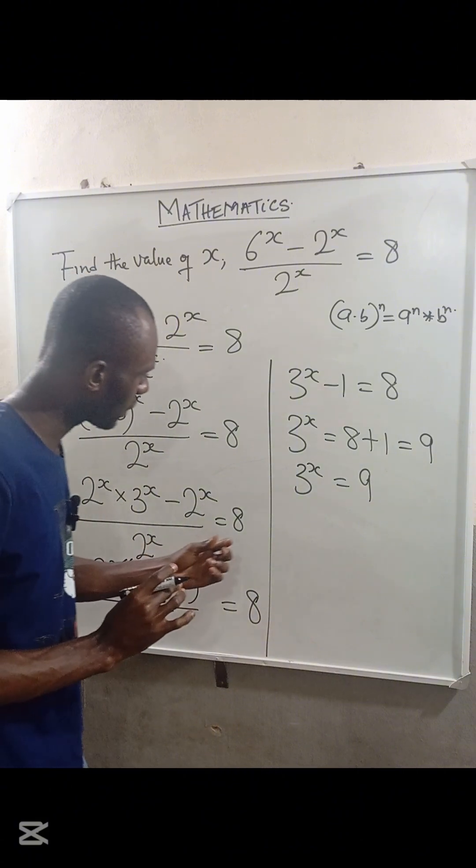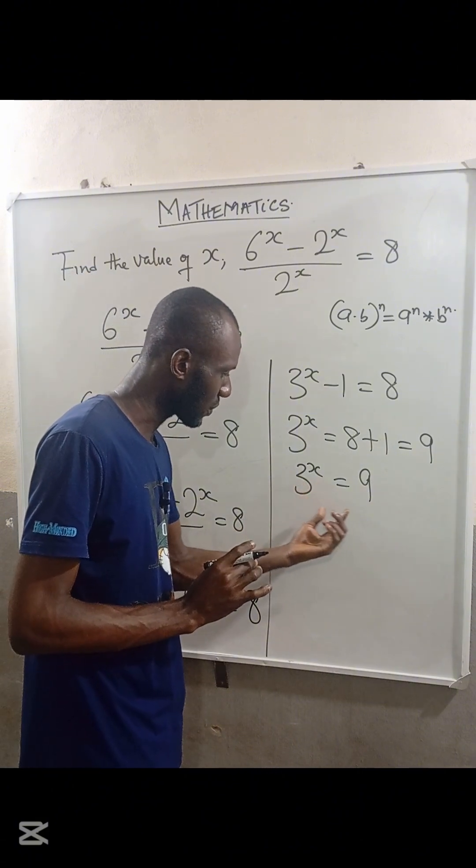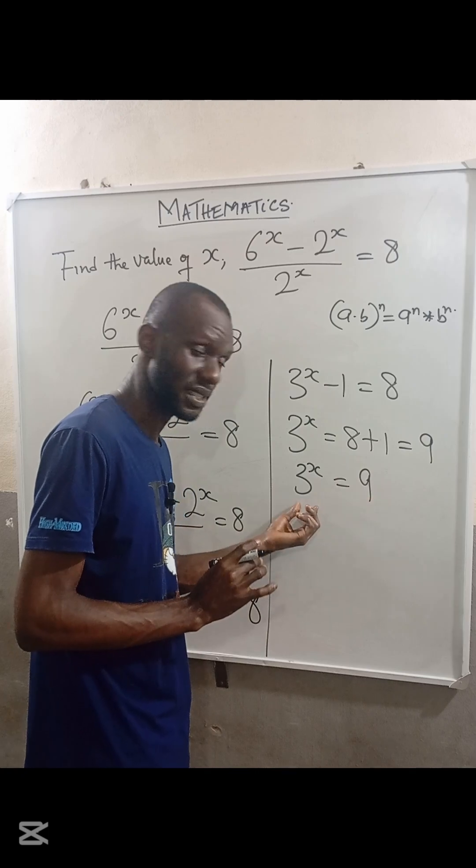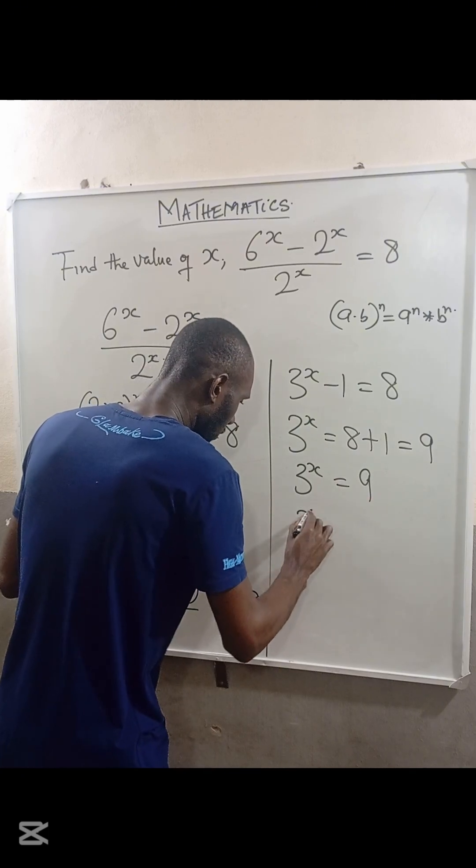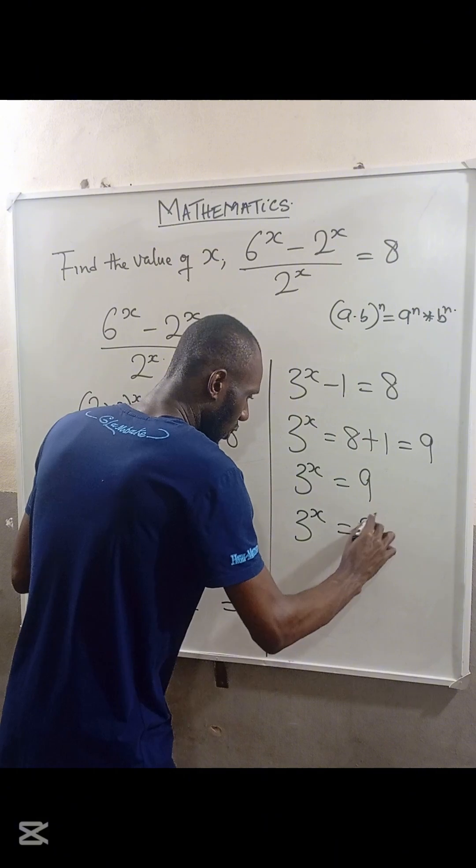Now, to obtain the value of x, we express 9 in powers of base 3. So we have 3^x = 3^2.